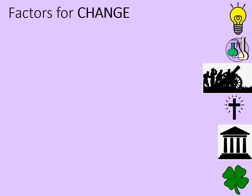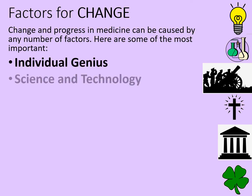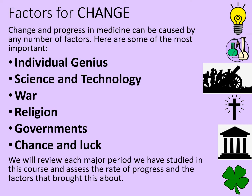Firstly we need to consider the factors for change, which I've summarized with images down the right hand side. Change and progress in medicine can be caused by any number of factors, but here are some of the most important ones we will focus on today: individual genius, science and technology, war, religion, governments, and chance and luck. We will review each major period we have studied and assess the rate of progress and the factors that brought this about.